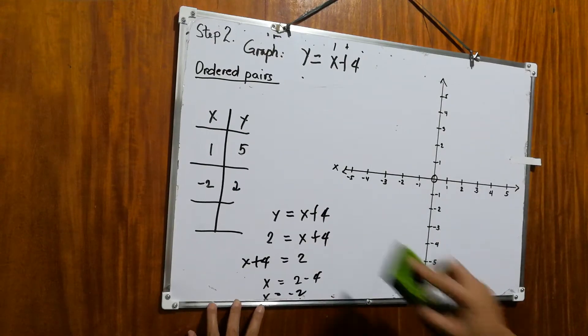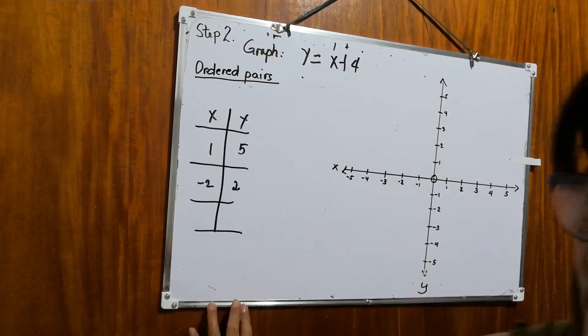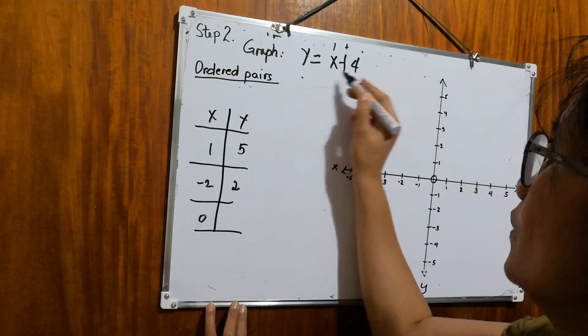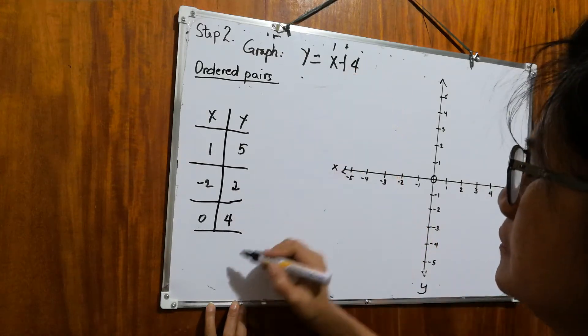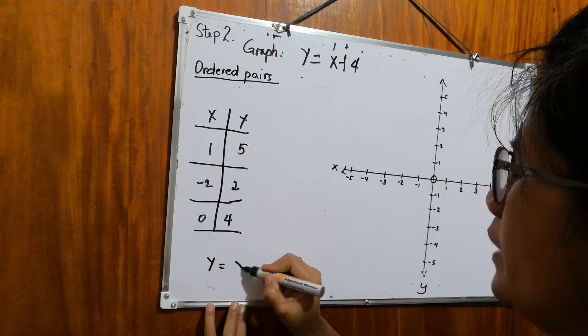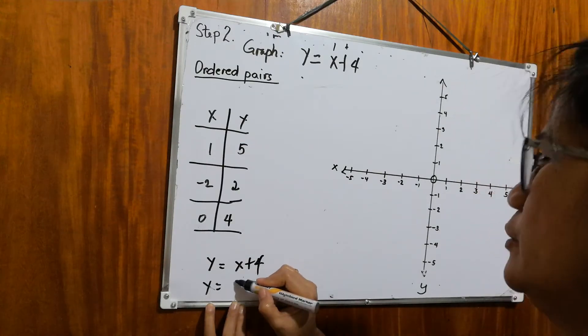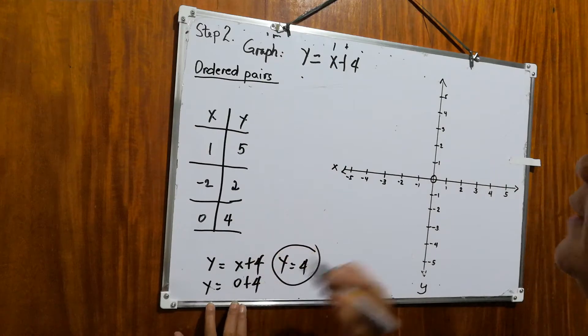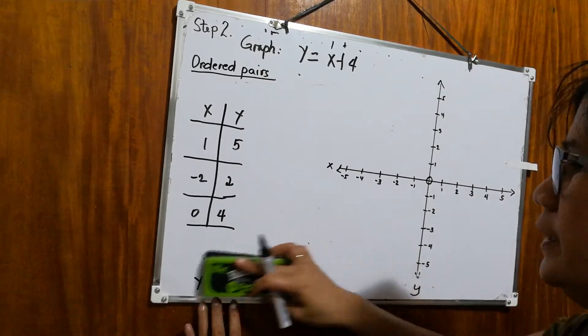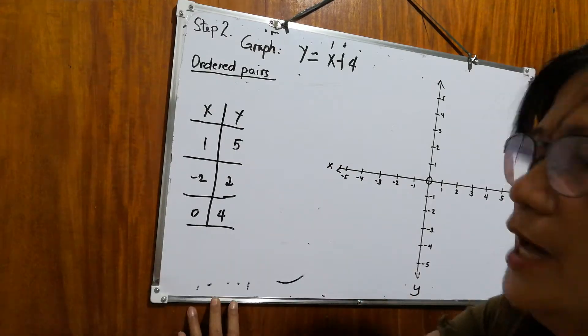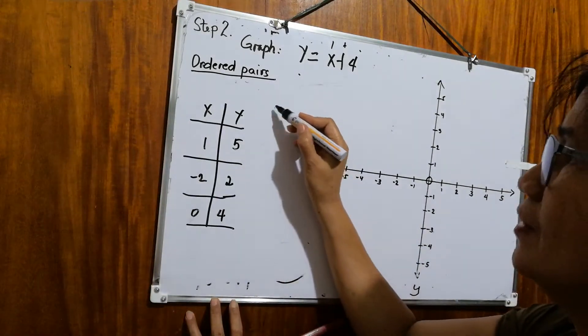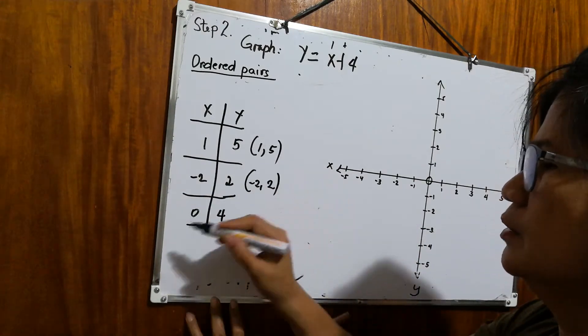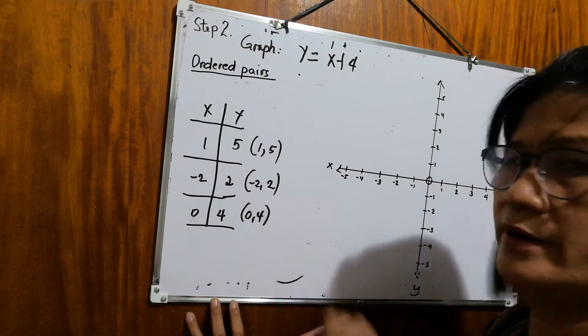Next. How about if we go back to x? How about if x is equal to 0? So what happened to y? The answer is 4, because y is equal to x plus 4. When you substitute x into 0, the value of y will be 4. And then after that, we're going to plot the ordered pairs. What are the ordered pairs we created? So we have here 1, 5, then negative 2, 2, then 0, 4.